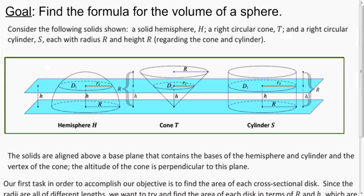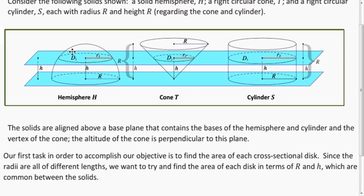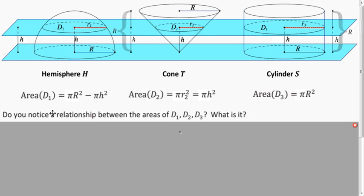We want to figure out what the volume of a sphere is. To do that, we're going to look at a hemisphere, a cone, and a cylinder — all with the same height and the same large radius R. We want to figure out what the area of the cross-sections equals when the heights are equal. By doing some geometry and algebra with Pythagorean theorem and similar triangles, we get these formulas: the area of the cross-sections of the hemisphere is π(R² − h²); for the cone, it's πh²; and for the cylinder, it's πR².